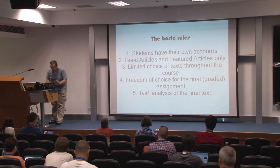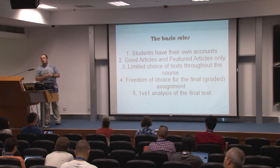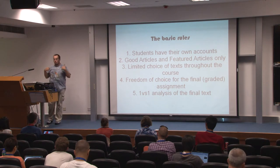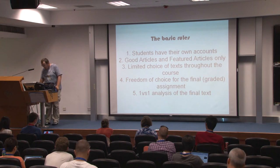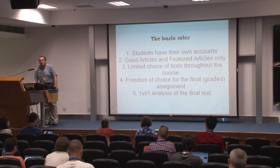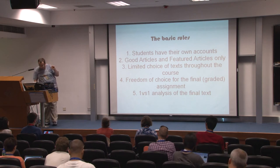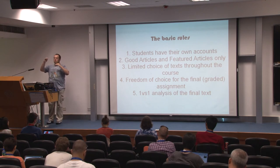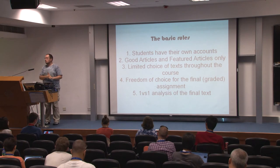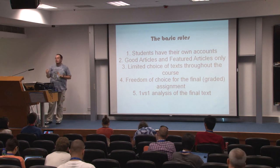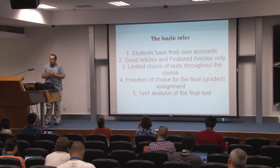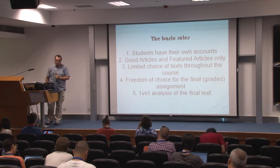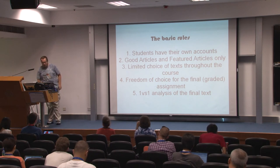The course was graded — students were given marks for the final assignments, and those marks were on the same level of importance as all other course marks. There was optionality in the sense that the university allows students to choose from a number of translation courses: translating literature, translating poetry, translating medical texts, technical texts, and so on. Somewhere among them, students had wiki translation. Those who wanted were able to apply for this particular course, and they were graded for it as they would be for any other.